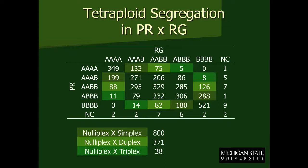We are not manipulating things — it's just an interesting way the numbers are sorting out. We can also use nullaplex by duplex in the mapping, and there are 371 of those SNPs segregating in that manner in this population. A nullaplex by triplex is really like a nullaplex by simplex cross just in the other direction, and we have 38 of those. The duplex by duplex or duplex by simplex SNPs are segregating but we're not going to focus on those yet.